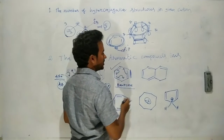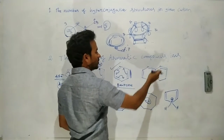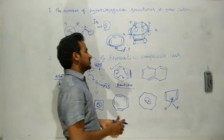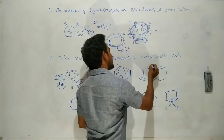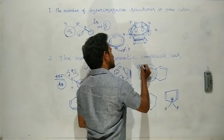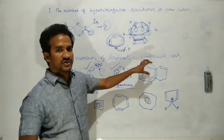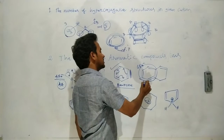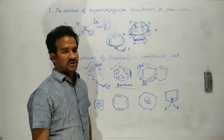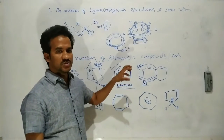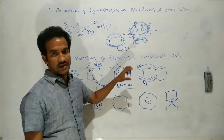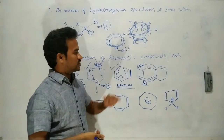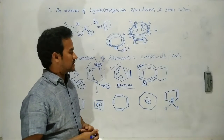The next compound has four pi bonds in conjugation giving 8 pi electrons overall, but within one ring there is a continuous conjugation among 6 pi electrons. If at least one aromatic ring (with 6 pi electrons in continuous conjugation) is embedded in the structure, the compound is considered aromatic. This was also a previous JEE Advanced question. So this compound is aromatic.